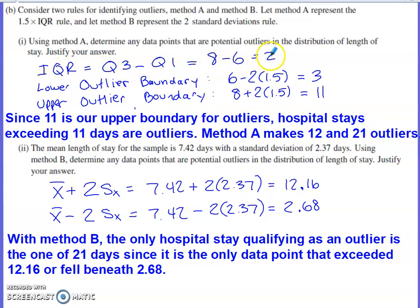So if you go back to part A, take the upper quartile and the lower quartile and find a difference, you get two. If you multiply that by 1.5, two times 1.5 is going to give you three. And if I go down by three from the lower quartile, that gives me three as my lower boundary for outliers. And if I go up by three from the upper quartile of eight, that gives me 11 as my upper boundary for outliers. So they tell us to use method A to try to figure out if we have any outliers. Justify your answer. We've got our work shown, we've got our lower and upper boundaries for outliers clearly established.